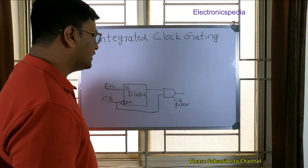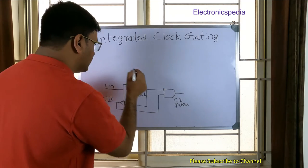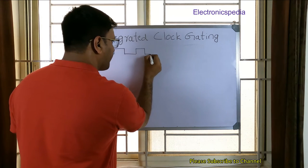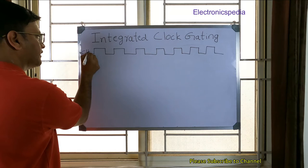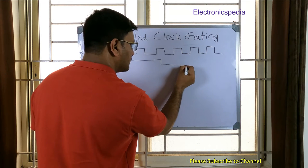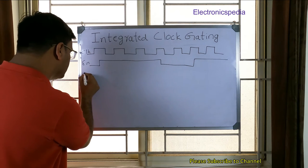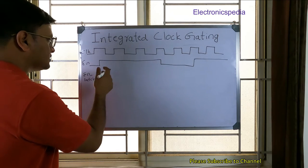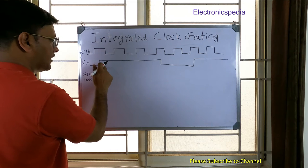Let's understand how the integrated clock gating cell works in terms of waveforms. This is my clock signal, and this is my enable input. Now I have the output of the enable latch, which I'll call enable_latch. We consider the negative level — the active-low level — of the clock, and we sample the enable signal during that active-low period.